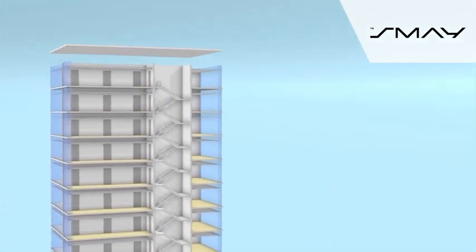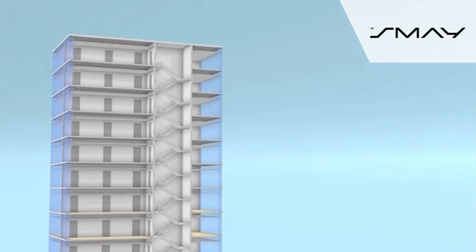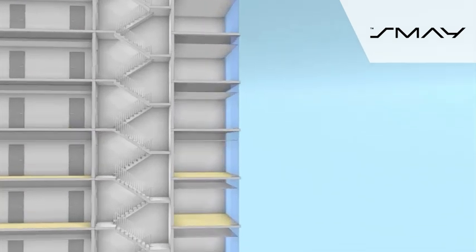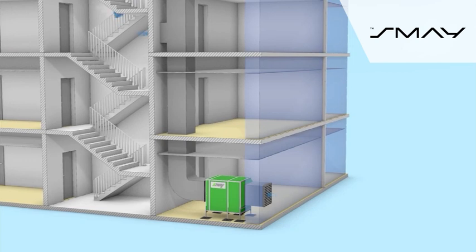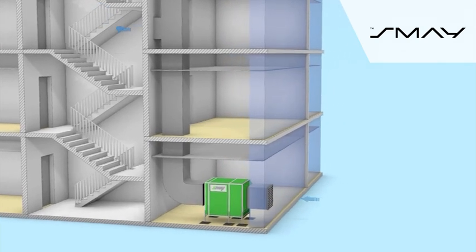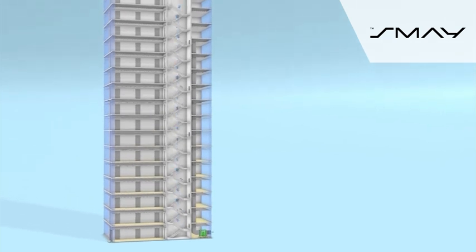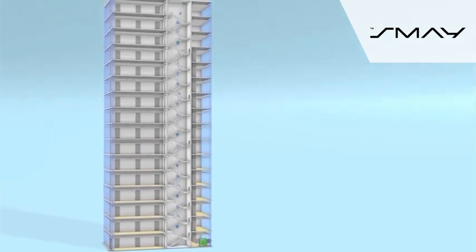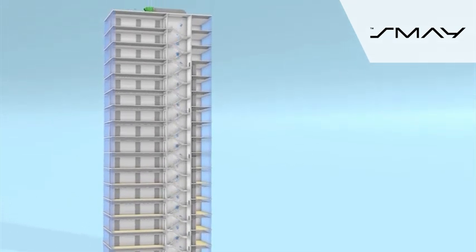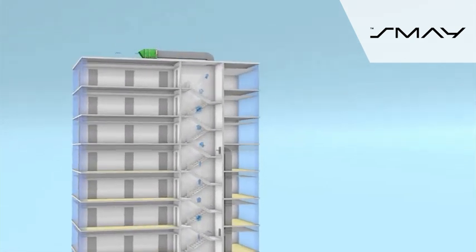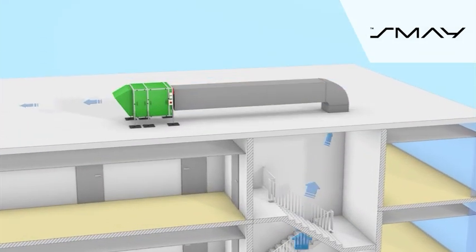In case of higher buildings, it is necessary to use two unidirectional Iceway FC units. The task of the first device supplying air to the staircase is to produce and control overpressure in the staircase at the required level and generate directed airflow inside the staircase.